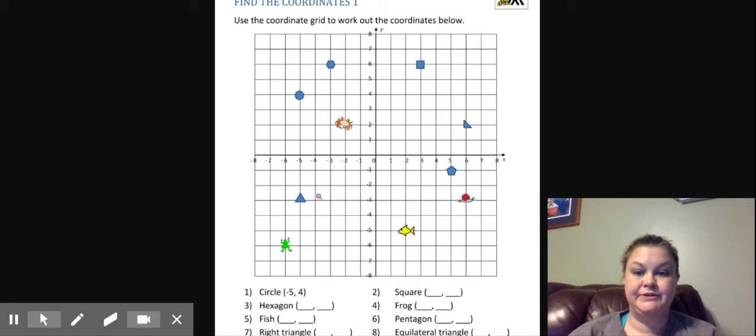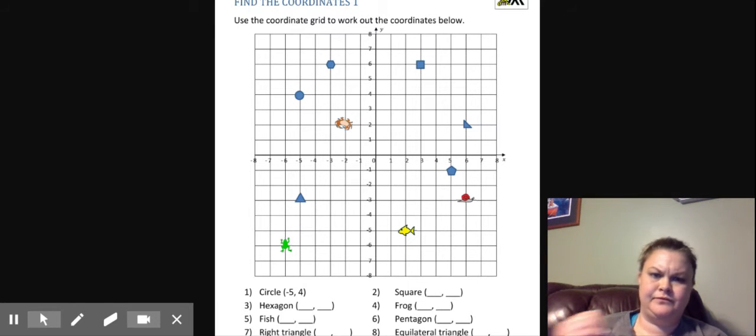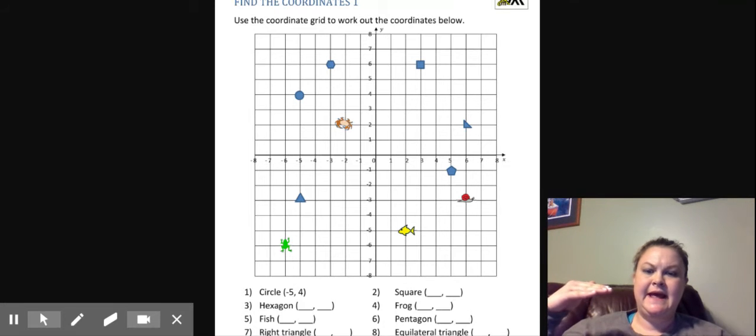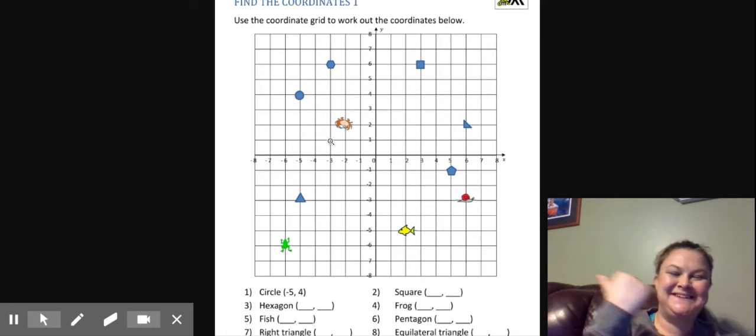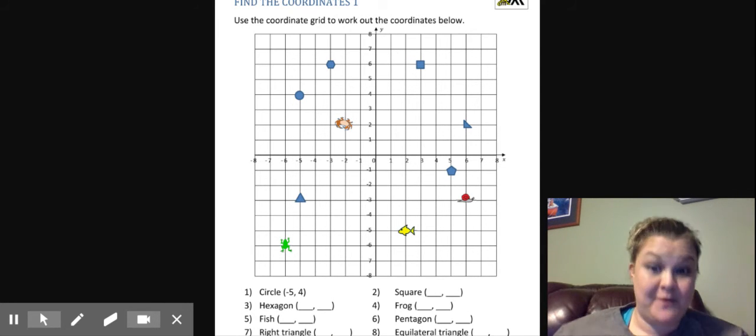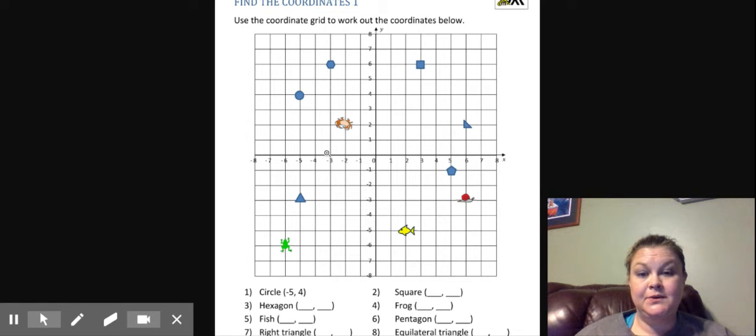For problem number one it has circled negative five four. If you look at the alphabet, the letter X comes before Y, so you're gonna go across first. It's asking for negative five, so you're gonna start at the origin and go backwards one, two, three, four, five. Then you have a positive four, you're gonna go up four: one, two, three, four, and that's gonna give you your circle.